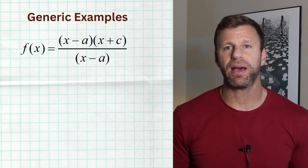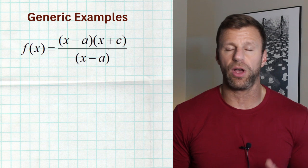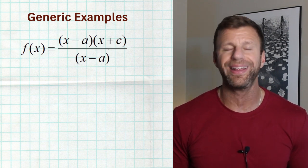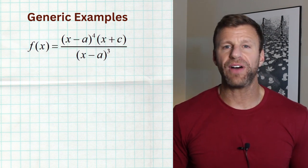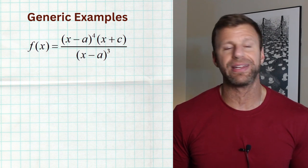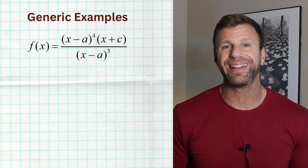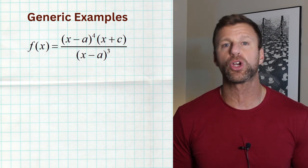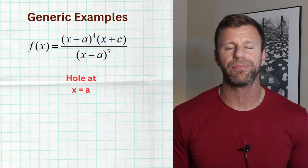In the next example, we have x minus a times x plus c over x minus a. We also have x minus a in both the numerator and denominator, but their multiplicities are equal — both have a multiplicity of one. That produces a hole at a. In the final generic example, we have x minus a to the fourth on top times x plus c, and x minus a to the third on the bottom. The shared zero of a is in both the numerator and denominator, but the multiplicity is greater in the numerator, producing a hole at x equals a. So just focus on: if you only make the denominator zero, that's a vertical asymptote. If it's a shared factor, check the multiplicities — greater in the denominator means vertical asymptote, equal or greater in the numerator means a hole.